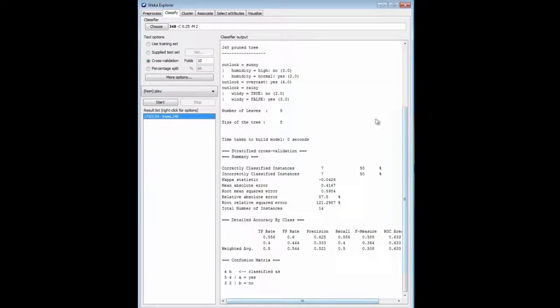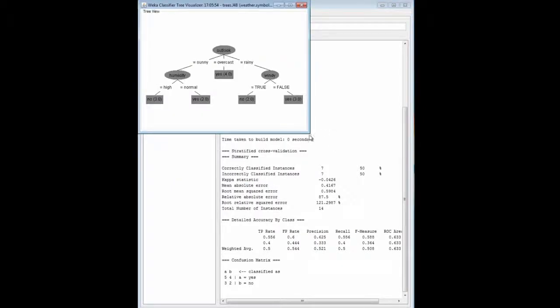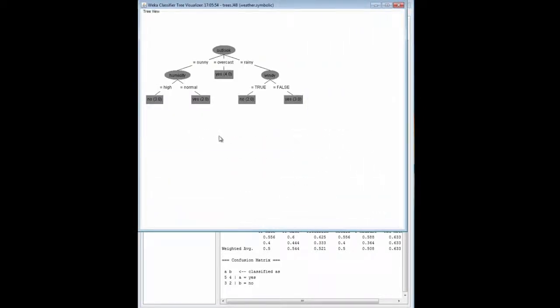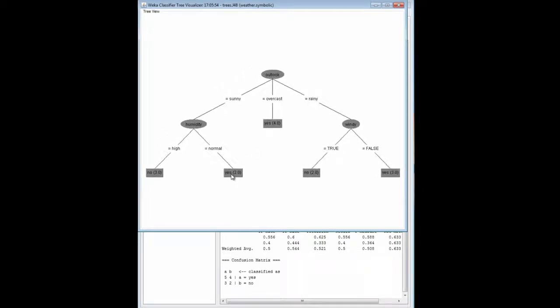We get a tree, the very tree I showed you before. Split first on outlook, sunny, overcast, rainy, and then if it's sunny, split on humidity. Three instances reach that node, then split on normal. Three yes instances reach that node, and so on. We can look at the tree using the right-click menu, visualize the tree. Here it is. We'll fit that to the screen.